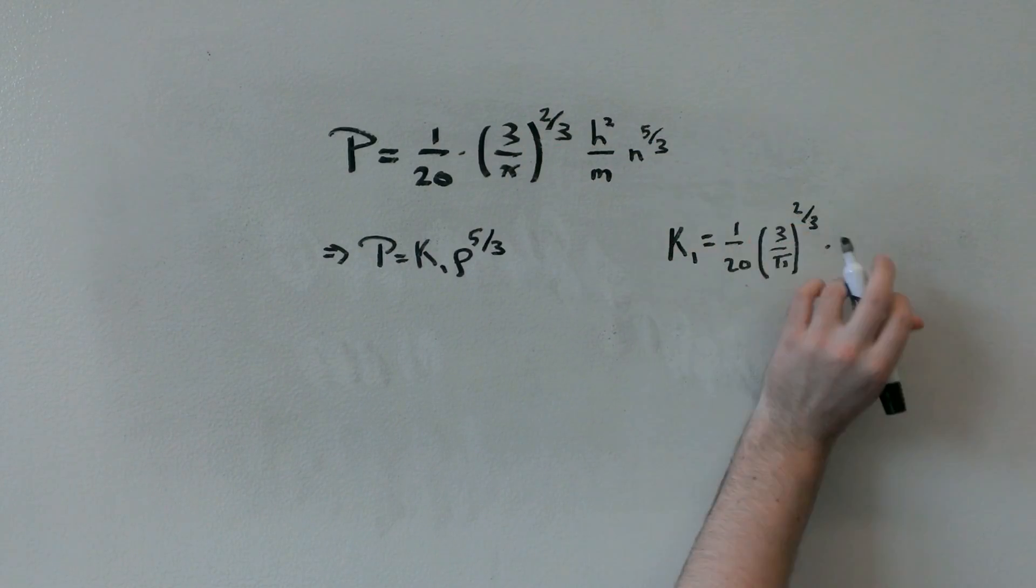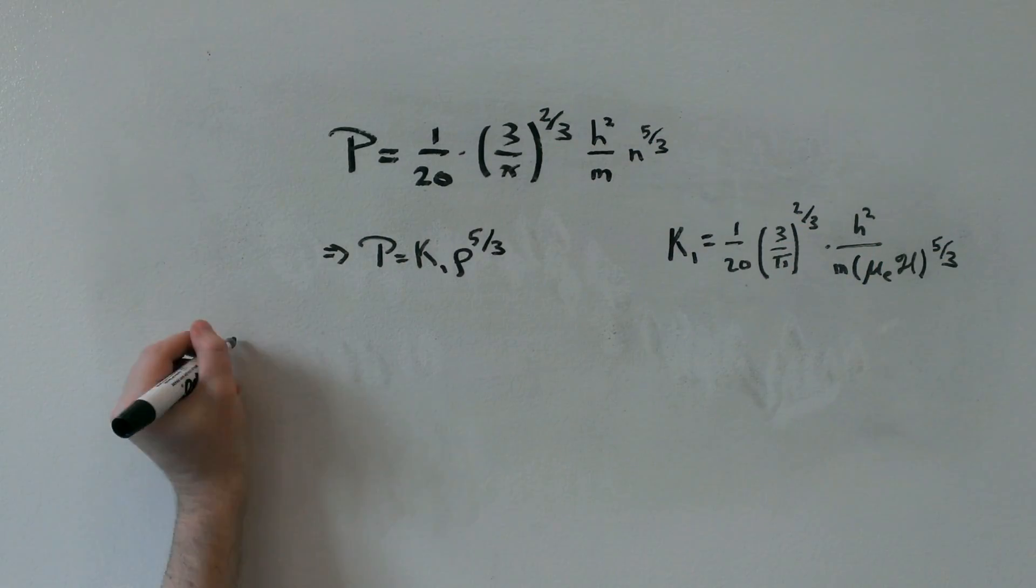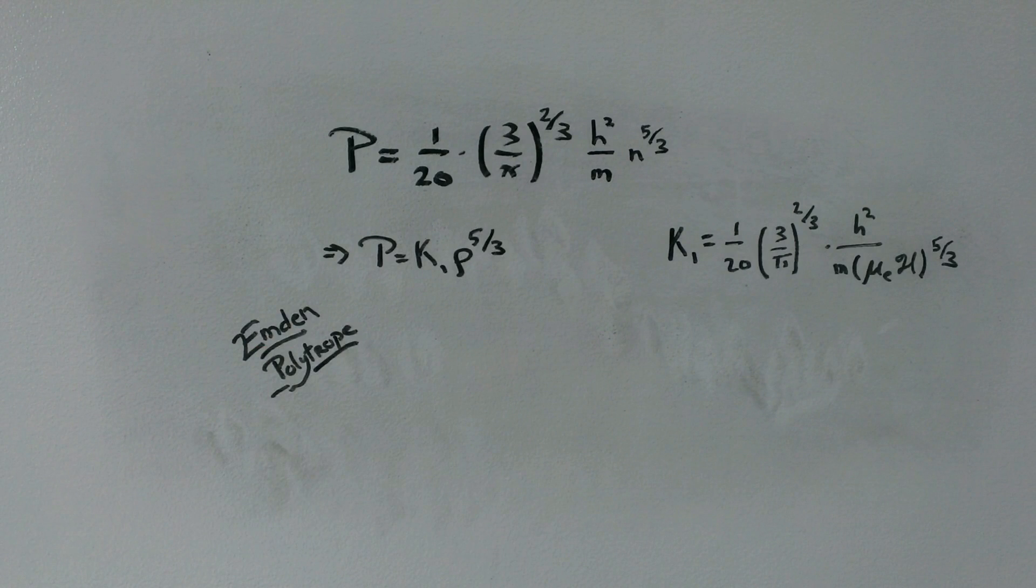From there, we can simplify to form this, which is of the form of an Emden polytrope of index 3/2, where mu_e is the mean molecular weight of electrons, which is 2.